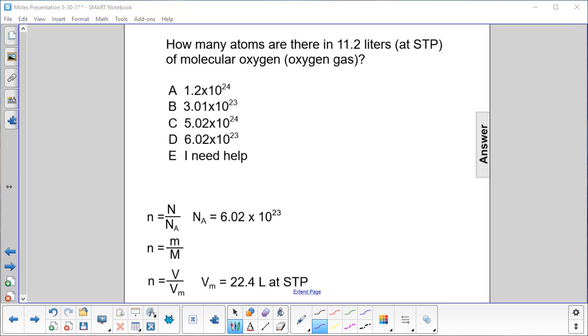How many atoms are there in 11.2 liters of molecular oxygen at STP? So this is a little bit of a wrinkle here. Molecular oxygen is O2.